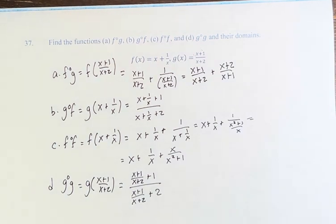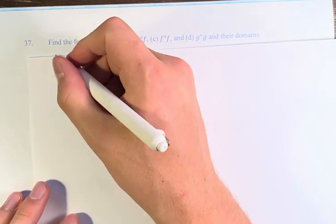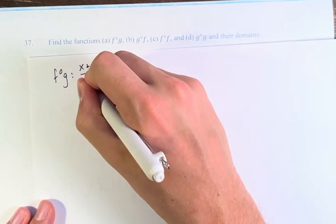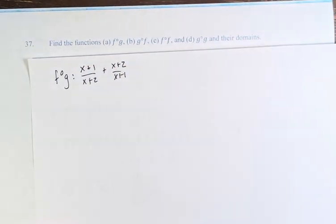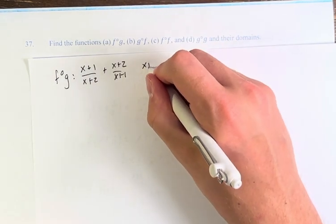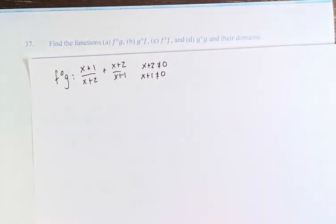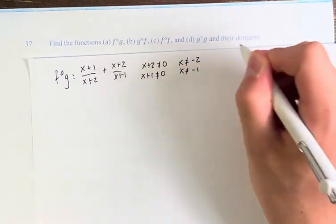Now we have to find the domains of these functions. For f of g, we had (x plus 1 over x plus 2) plus (x plus 2 over x plus 1). The restrictions on this domain are that the denominators cannot be equal to zero. So x plus 2 cannot equal zero, and x plus 1 cannot equal zero. Therefore, x cannot equal negative 2 or negative 1.